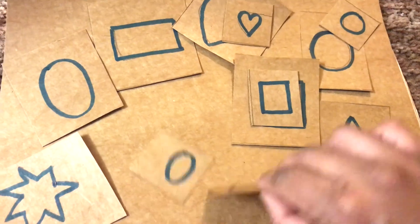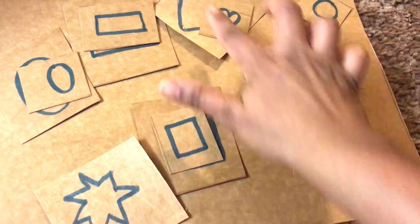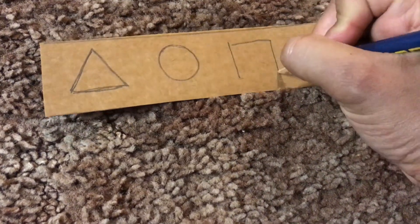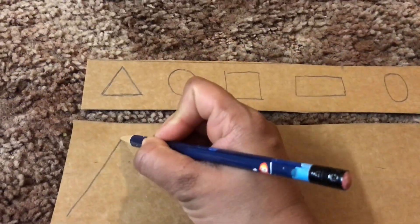For making these types of small and big cards, you just simply need cardboard. Just cut out two cardboard strips, and then draw small shapes on a smaller strip and big shapes on a bigger strip.